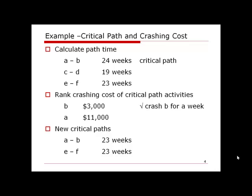If we only crash path AB and reduce it from 23 to 22 weeks, path EF remains at 23 weeks and still determines the project duration. Reducing one critical path while leaving another unchanged does not reduce the total project time. When multiple critical paths exist, we must reduce the time on every one of them simultaneously.